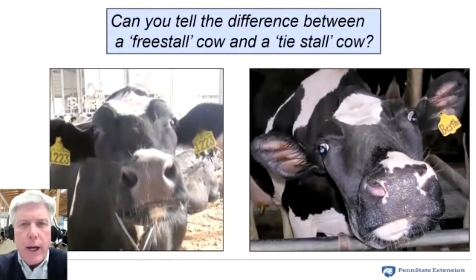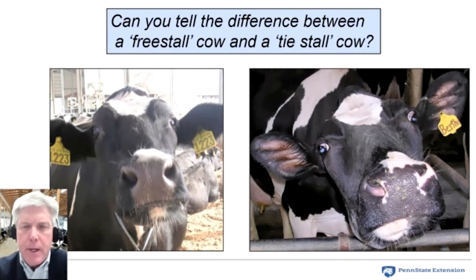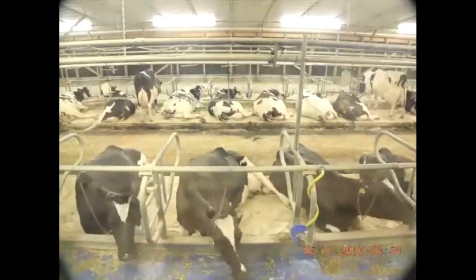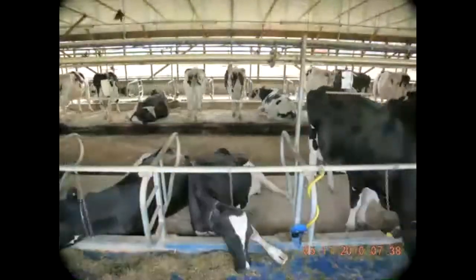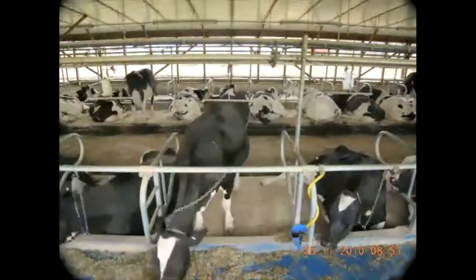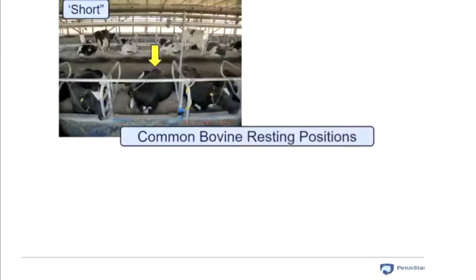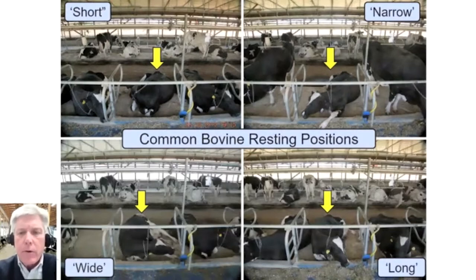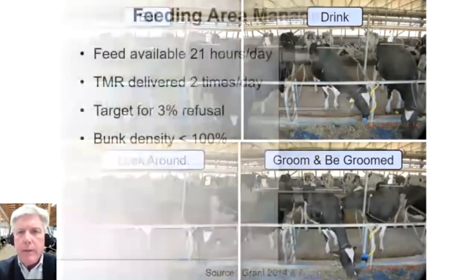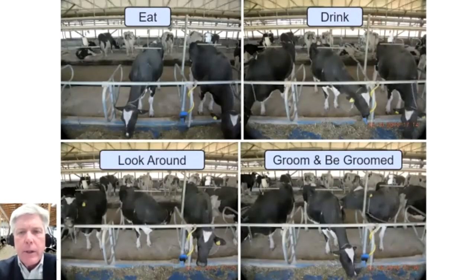Can you tell the difference between a free stall cow and a tie stall cow? The most common answer is the free stall cow has a number and the tie stall cow has a name, but their genetics are probably pretty similar. Here's a tie stall facility with good size and structure — in about eight hours of footage you see all the resting positions: the short position with the chain long enough to allow her head back on her ribs, the long position with a low enough front curb, and the wide position with enough space. From an animal welfare standpoint, cows also have the opportunity to look around, groom, and be groomed.